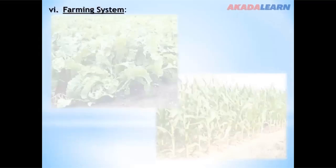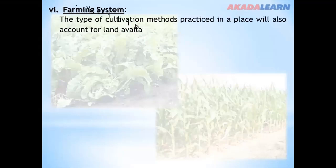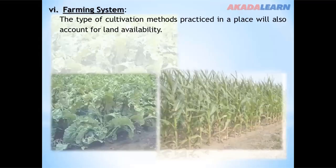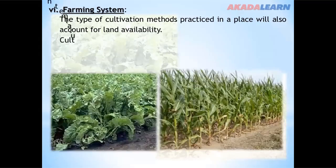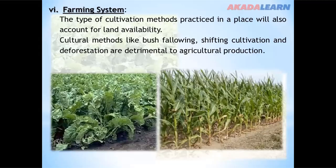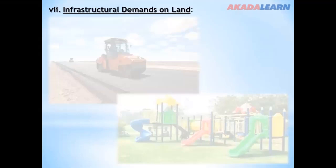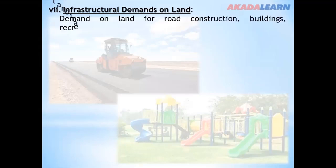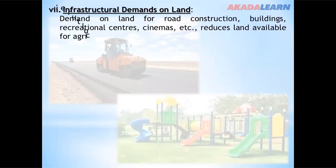Farming system. The type of cultivation methods practiced in a place will also account for land availability. Cultural methods like bush fallowing, shifting cultivation and deforestation are detrimental to agricultural production. Infrastructure demands on land — demand for road construction, buildings and recreational facilities — also reduces land availability for agriculture.